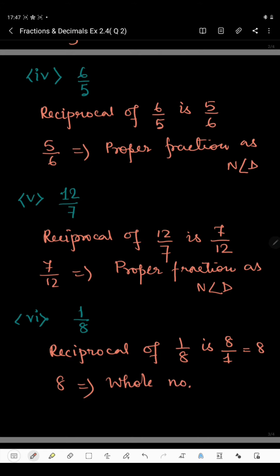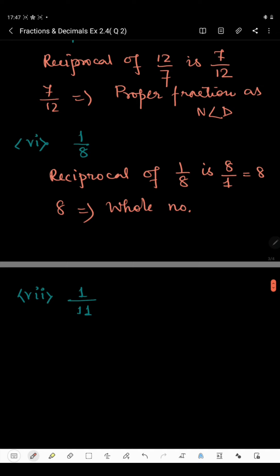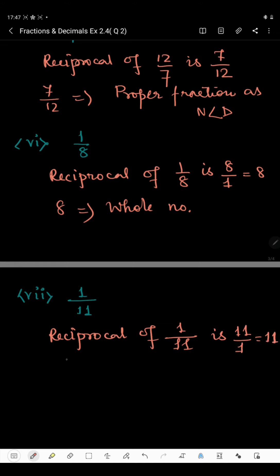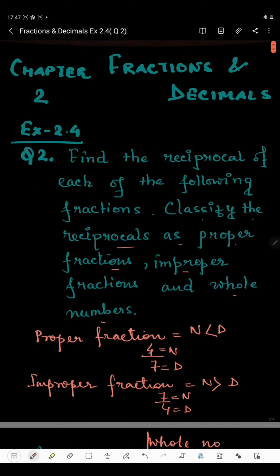The last part of this question is 1 by 11. The reciprocal of 1 by 11 is 11 by 1, which is simply 11. Now 11 is a whole number because this is not a fraction. So this was the last part of question number 2. Thank you, students.